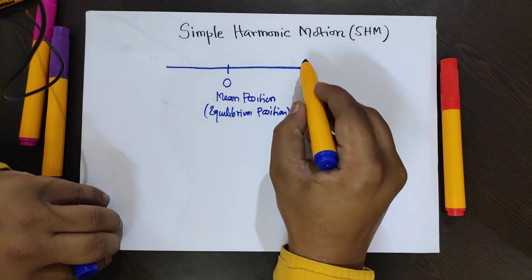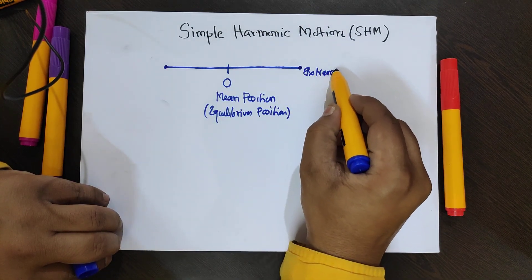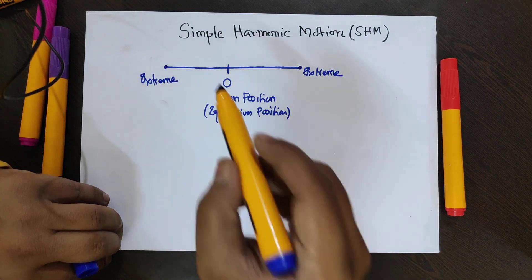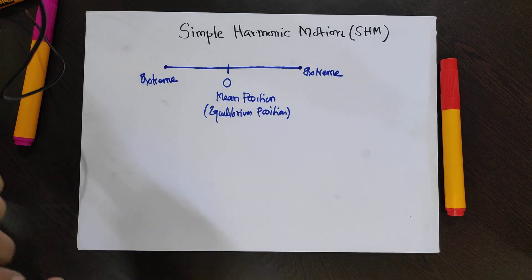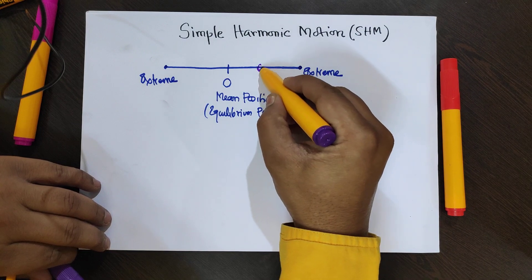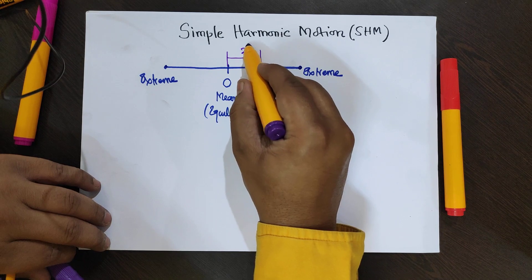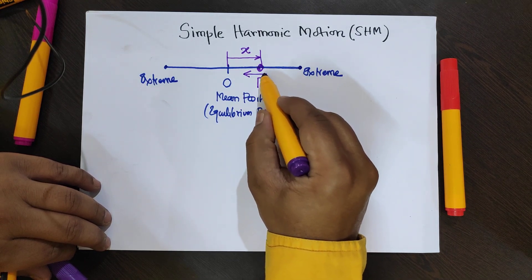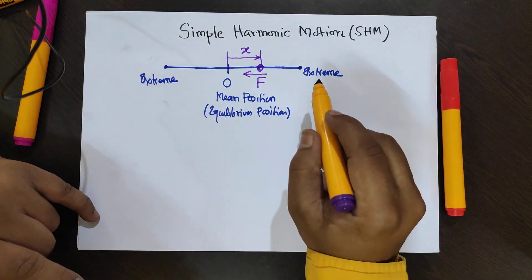These two are the extreme positions — this one extreme and this one is also an extreme position. In SHM, the restoring force on a particle — if the particle is at this position and its displacement from the mean position is x — the restoring force is directed towards the mean position and is proportional to the displacement from mean position.